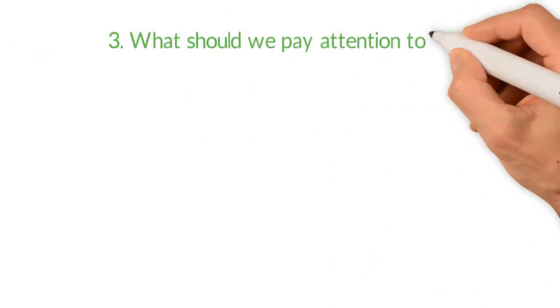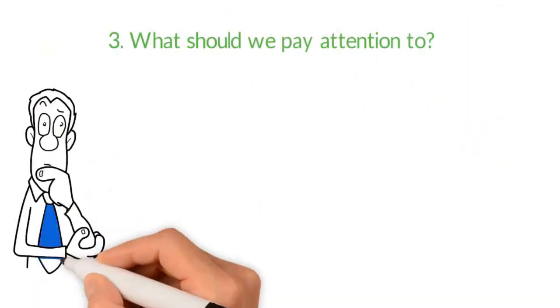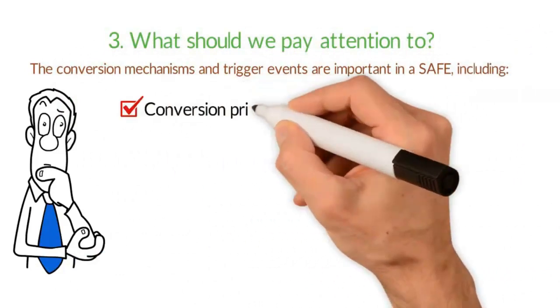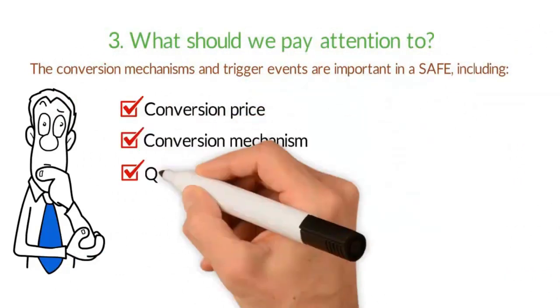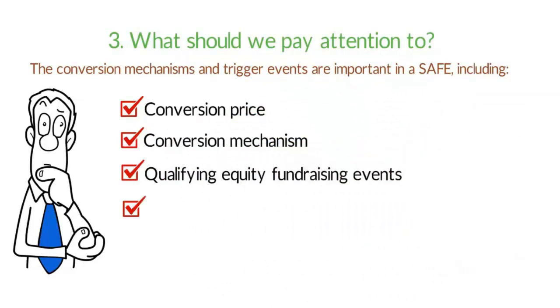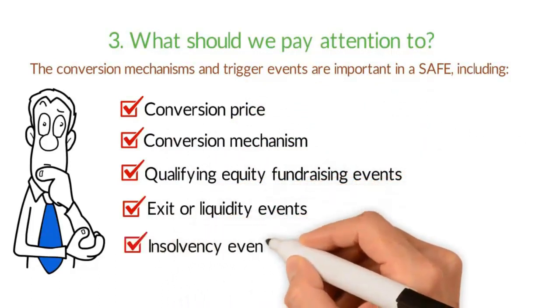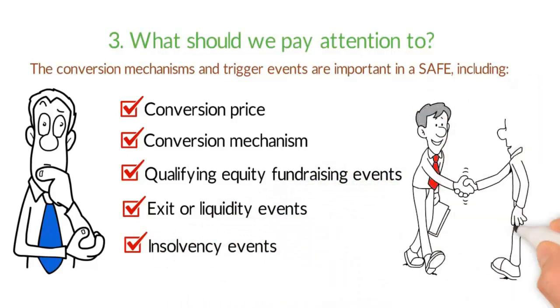What should we pay attention to? The conversion mechanisms and trigger events are important in a SAFE, including conversion price, conversion mechanism, qualifying equity fundraising events, exit or liquidity events, and insolvency events. These should be clearly laid out in a SAFE agreement.